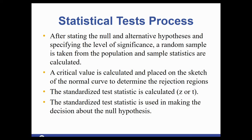Here's an overview of the process: you'll state your null and alternative hypothesis, be given the level of significance, and a random sample is taken from the population. Sample statistics — sample mean and standard deviation — are calculated. Then we find a critical value and place it on a normal curve so we know the rejection region. We calculate a standardized test statistic using the Z or T formula, then make our official decision — whether we're in the rejection region or not — always about the null hypothesis.